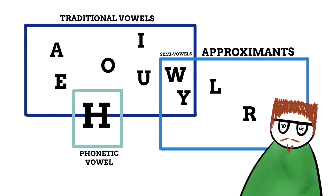So suffice to say, the answer to the question of how many vowels there are isn't as clear-cut as simply listing off the letters A, E, I, O, and U.